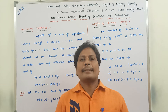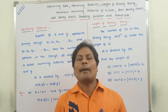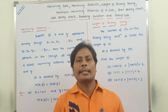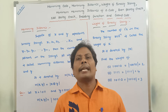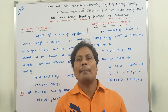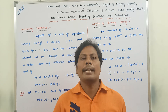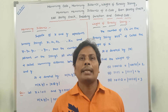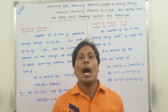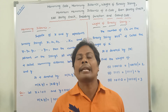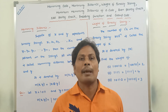Hi friends, today I am giving a lecture on two important definitions. The first one is Hamming distance, and the second one is weight of a binary string. In the previous video, we have already discussed what Hamming code is, how we get the Hamming code, and how we detect errors in the Hamming code — we discussed that with one example problem.